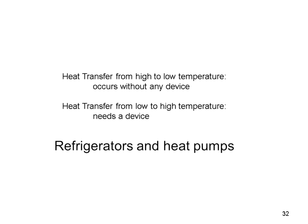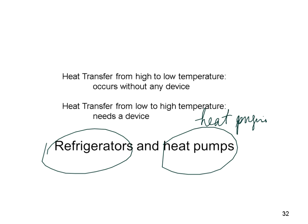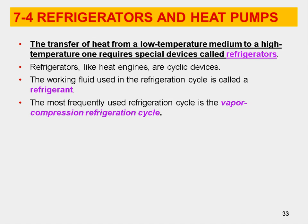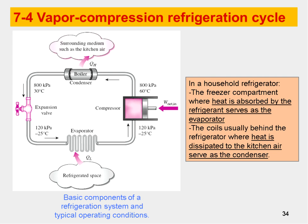Heat transfer occurs from high to low temperature without any device. To transfer heat from low to high temperature, you need a device — a heat pump or refrigerator. Refrigerators are cyclic devices where the working fluid is called the refrigerant. It operates on a vapor compression refrigeration cycle involving compression and decompression. The refrigeration cycle is like a Rankine cycle, just using a different working fluid.